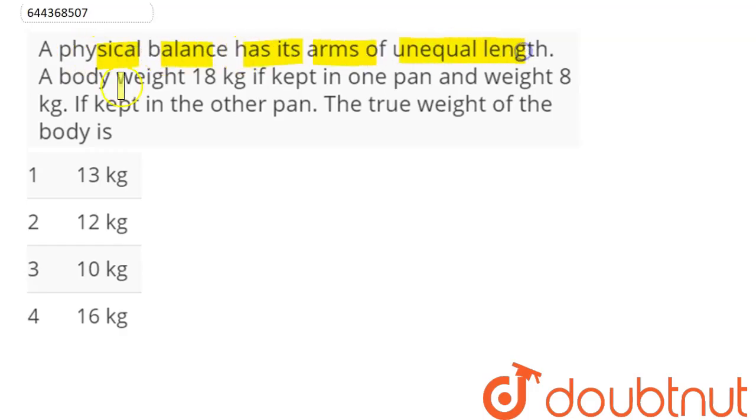its arms of unequal length. A body weighs 18 kg if kept in one pan and weighs 8 kg if kept in the other pan. The true weight of the body is? Hence we can see here this is our